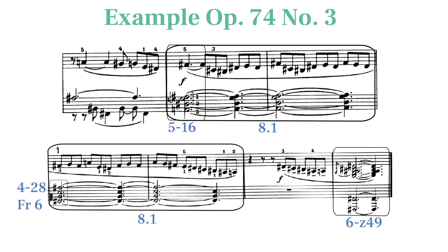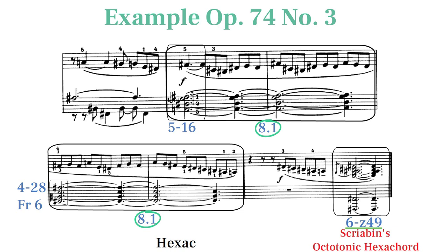This is a rare example where we see Scriabin using an entire octatonic scale melodically. He normally uses subsets of the octatonic scale, and this excerpt ends with one of Scriabin's favorite octatonic subsets, his octatonic hexachord, 6Z49.